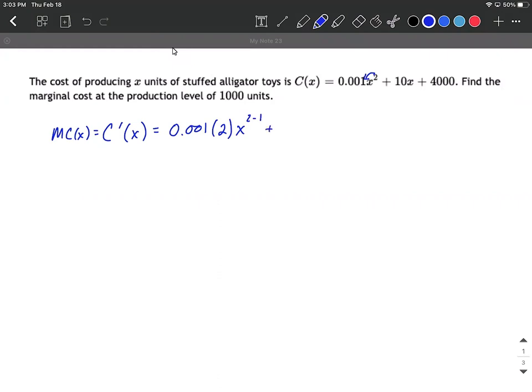Next, we can bring the 10 along. The exponent in the second term is one on the x. As we bring that one down in front, it's going to be multiplied by the 10, but then we reduce it by one. One minus one is going to give us zero for that new exponent. I'm just taking my time, showing all my work as we go. The derivative of a constant, that 4000, is going to be zero.